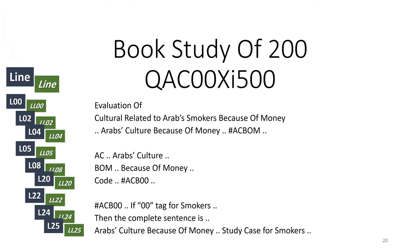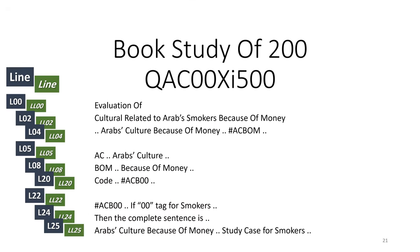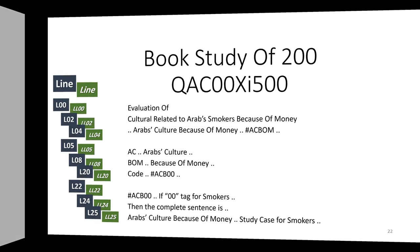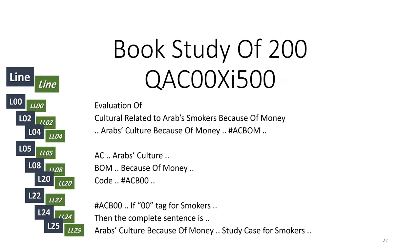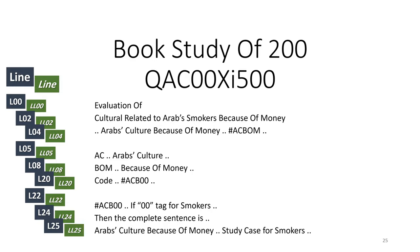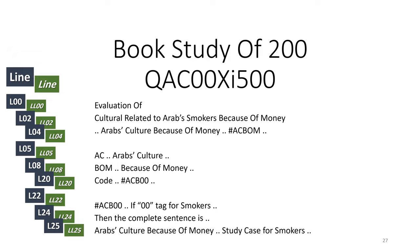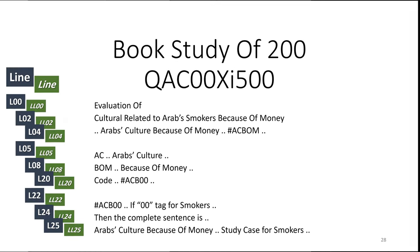We have the coding numbers for lines, which is L, and for words, LL. Like if you see here the lines, we have three blocks, every three lines. So the first block, the line and the words are the same numbering, except the L. L for lines, LL for words. In the first block we have 00, then for the first lines: 00, then 02, then 04, for both lines and words.